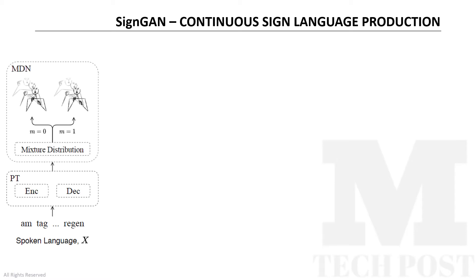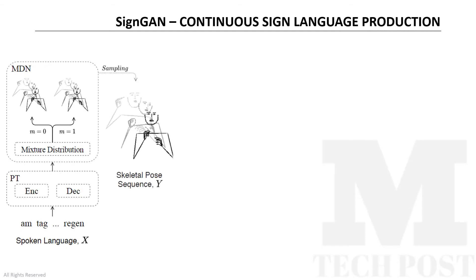Such poses are then given as input to a mixture density network (MDN in the figure). MDNs are models obtained through the combination of a standard neural network with a mixture density model, where a mixture model is a probabilistic model used to represent the presence of subpopulations within an overall population. Here, the researchers used the MDN to model the variation found in sign language poses. In particular, multiple distributions are used to parameterize the subspace from which the single skeleton poses will be sampled.